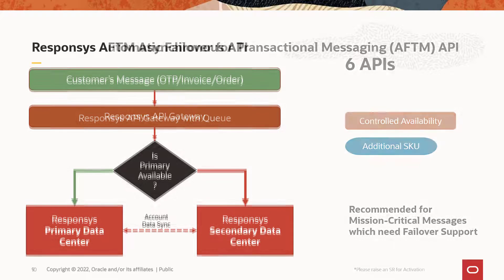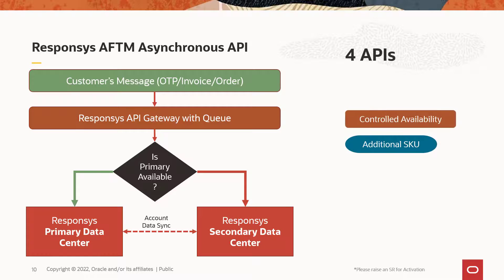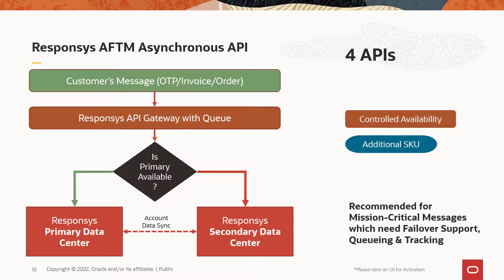AFTM asynchronous API provides an asynchronous alternative to the AFTM endpoints. They are recommended for mission-critical messages which need failover support, queuing, and tracking.